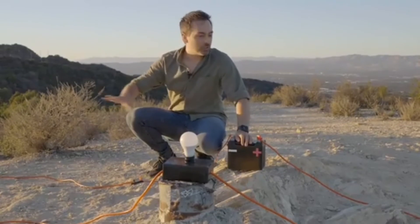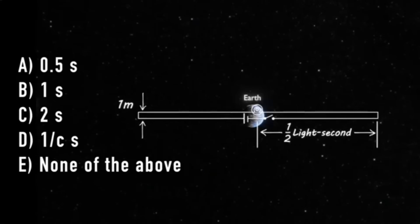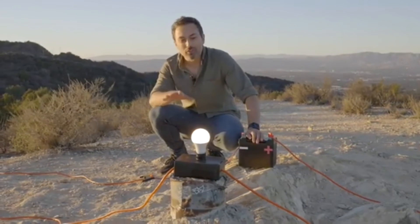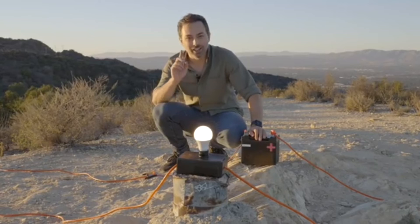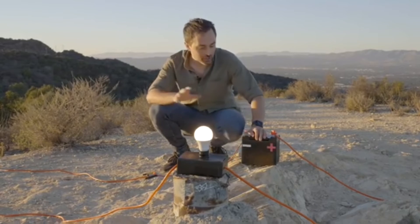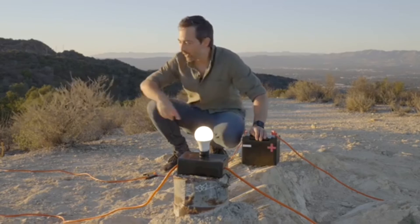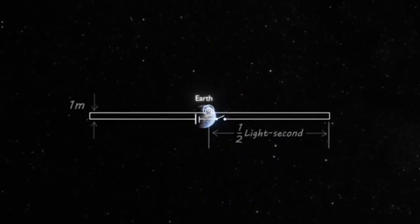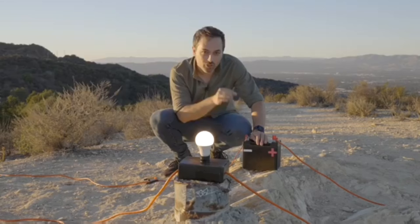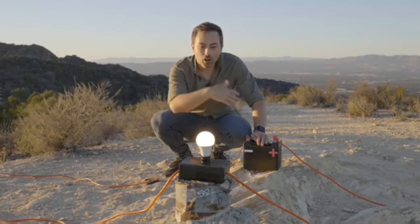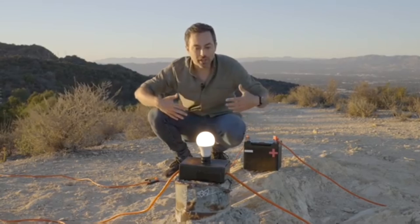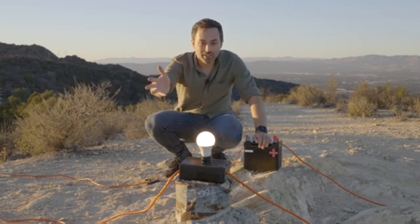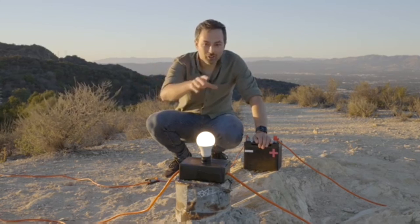So what is the answer to our giant circuit light bulb question? Well, after I close the switch, the light bulb will turn on almost instantaneously — in roughly 1 over C seconds. So the correct answer is D. A lot of people imagine that the electric field needs to travel from the battery all the way down the wire, which is a light second long, so it should take a second for the bulb to light up. But what we've learned is it's not really what's happening in the wires that matters — it's what happens around the wires. The electric and magnetic fields can propagate out through space to this light bulb, which is only one meter away, in a few nanoseconds. And so that is the limiting factor for the light bulb turning on.